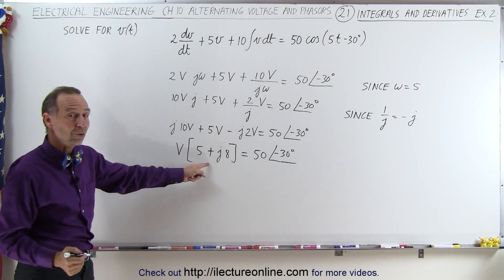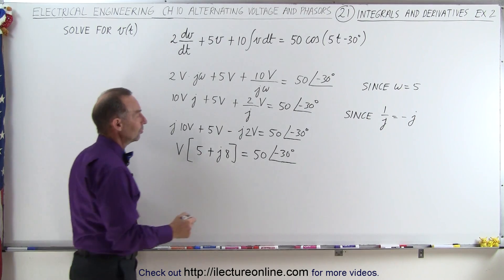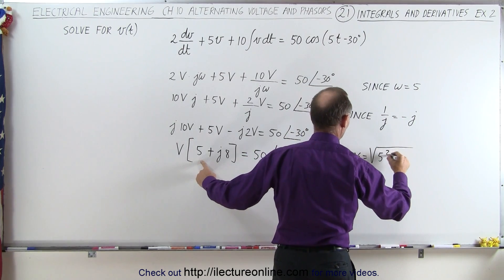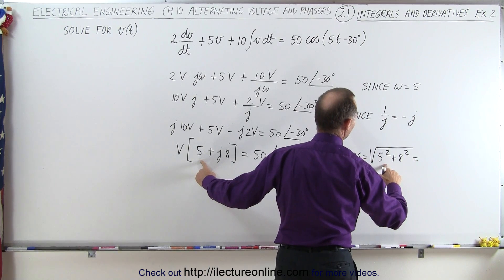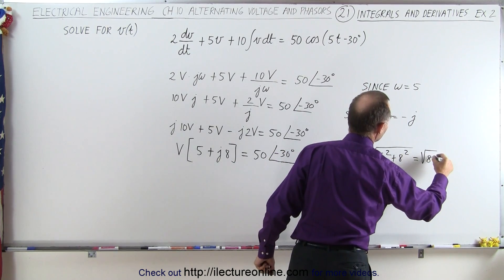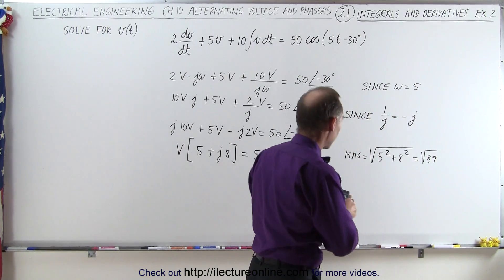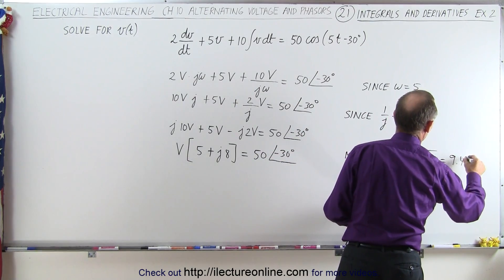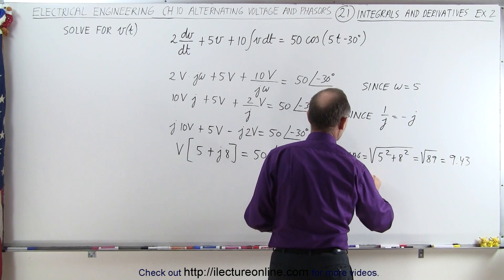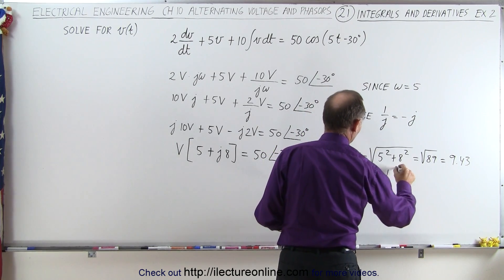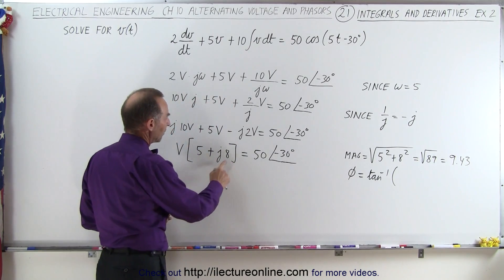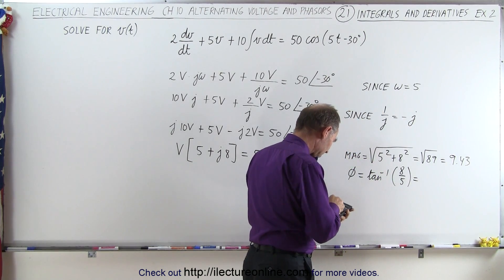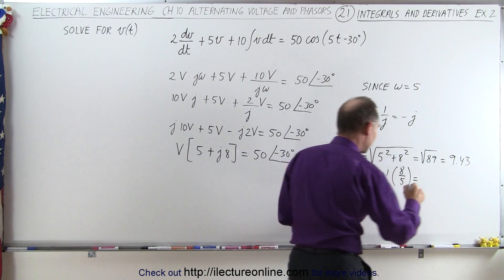Now we can go ahead and turn this into phasor form. The magnitude is equal to the square root of 5 squared plus 8 squared — that's 25 plus 64, which is 89 — so the magnitude is the square root of 89, which equals 9.43. As far as the phase angle, that would be the inverse tangent of the imaginary part divided by the real part, which is 8 over 5, and the inverse tangent of 8/5 is 58 degrees.